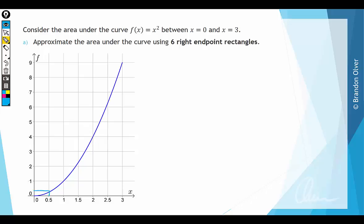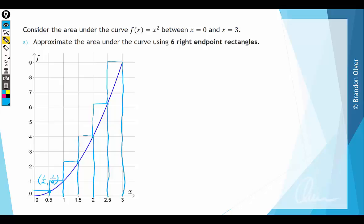The first rectangle has its right endpoint at x = 0.5, where y = 0.25 — putting 0.5 into f(x) gives a quarter. The next rectangle has its right endpoint at x = 1, then x = 1.5, continuing across until the last rectangle ends at x = 3. We calculate the area of each of those rectangles, add them up, and we'll have an approximation for the area under the curve.